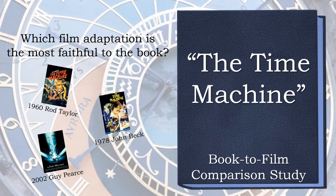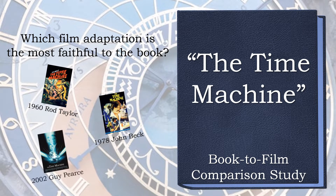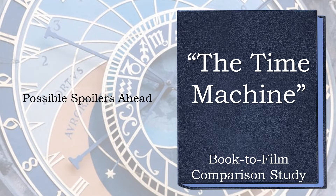These versions include a 1960 version starring Rod Taylor, a 1978 made-for-TV version starring John Beck, and a 2002 version starring Guy Pearce, who makes his second appearance here at Book2Film, after his turn as Ebenezer Scrooge in 2019's A Christmas Carol. Warning, possible spoilers ahead!